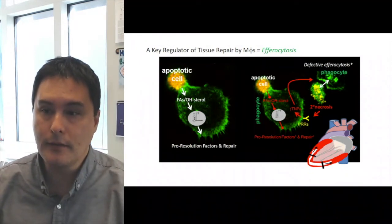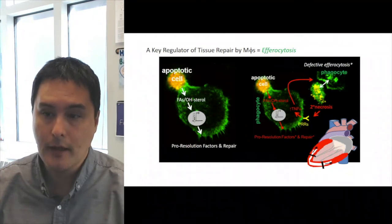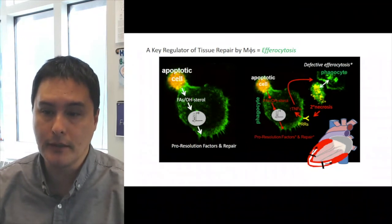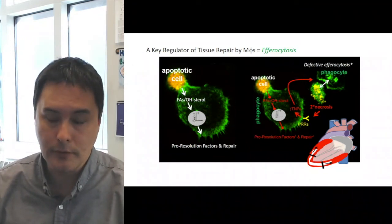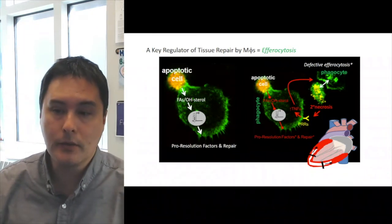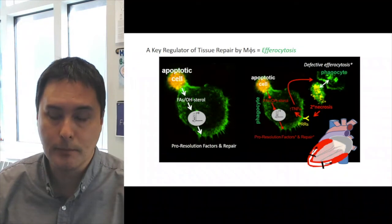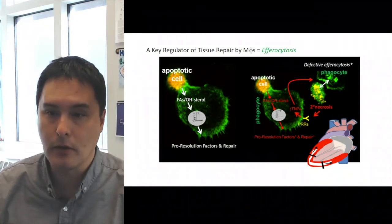Now in the case where you have defective efferocytosis, this can lead to secondary necrosis and the propagation of inflammation, but you also have the failure to turn on these transcriptional programs that lead to inflammation resolution and repair. A working model is that defective efferocytosis promotes infarct expansion and poor cardiac remodeling after myocardial infarction.